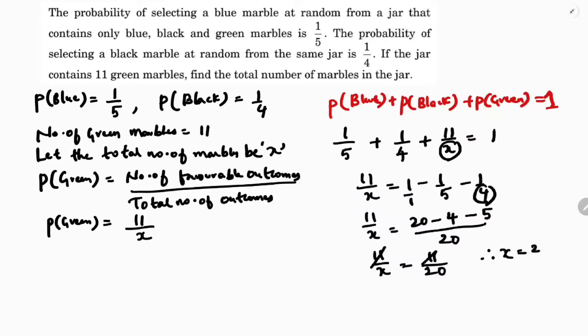Since 11/x equals 11/20, canceling 11 on both sides gives x equals 20. So the total number of marbles in the jar is 20.